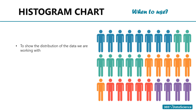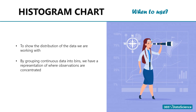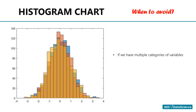Histograms are great when we would like to show the distribution of data we are working with. This allows us to group continuous data into bins and provide a useful representation of where observations are concentrated. Be careful when the data you are working with contains multiple categories or variables — multi-column histograms are to be avoided when they become too cluttered.